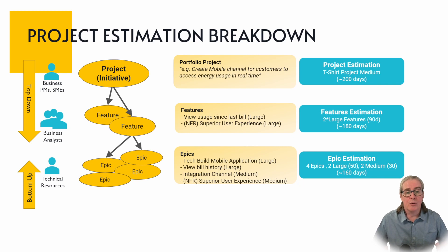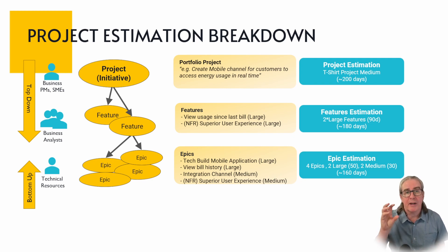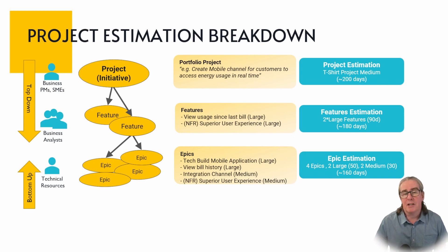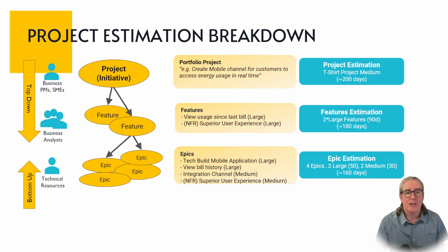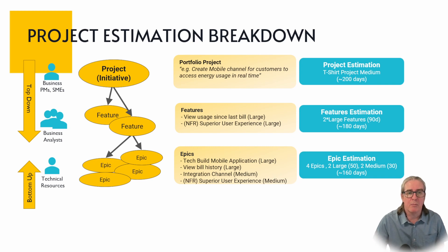These features are then broken down again into epics. Here we've got four epics: building the shell of the mobile app itself, building the view history part of it — both larges — an integration channel pointing back to the data to bring it into the mobile app, and a superior UX epic to go over the whole thing and make it really slick. So maybe here you've got two large and two mediums, and in this organisation with their t-shirt sizing, maybe that's 160 days. You can see that's come down quite a lot since the initial estimate, but we've got more information now, so the estimate is a bit more robust.